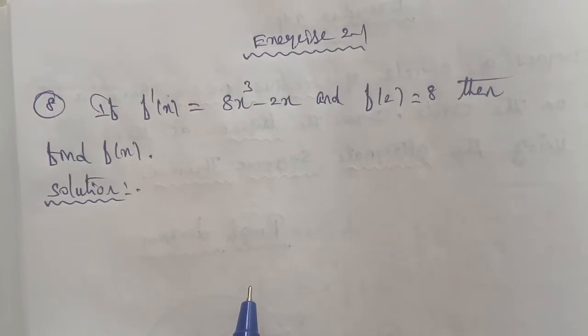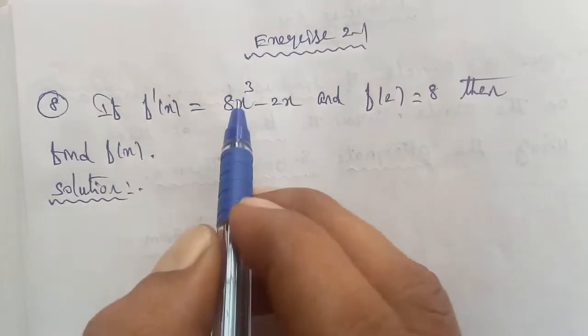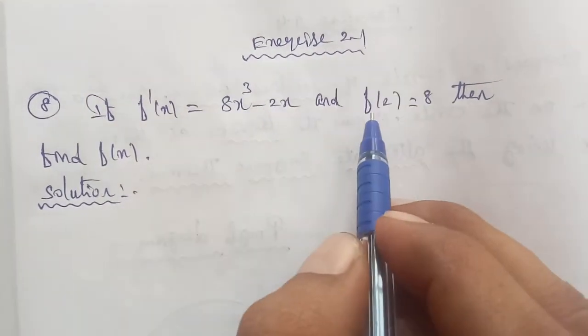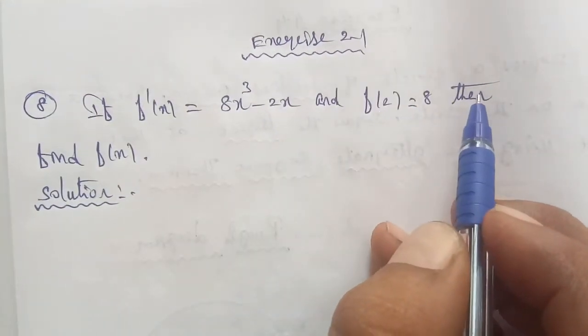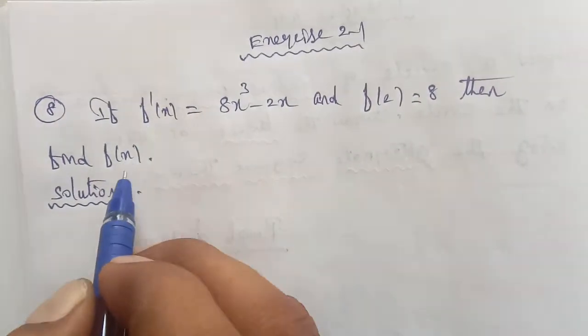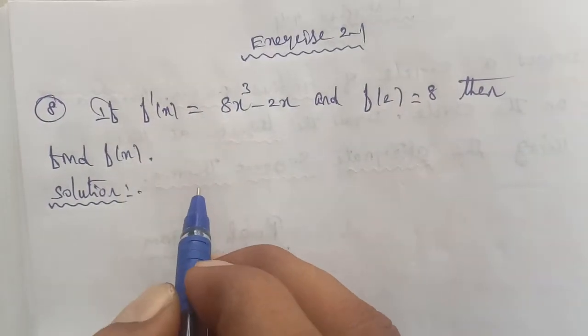Hi students, I am Gopinath. This is Exercise 2.1, Question 8. If f'(x) = 8x³ - 2x and f(2) = 8, then find f(x).